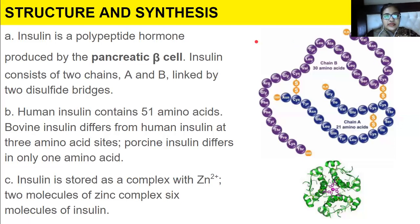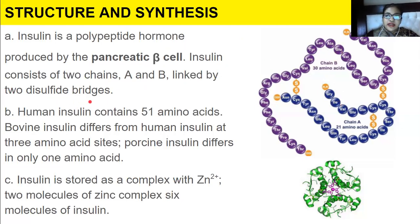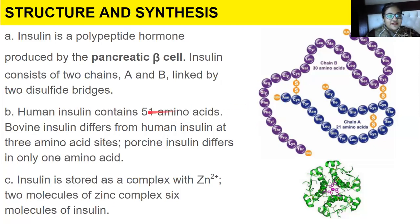Insulin is a polypeptide hormone produced by pancreatic beta cells. It consists of two polypeptide chains — chain A and chain B — linked by two disulfide bridges. Human insulin contains 51 amino acids. Bovine insulin differs from human insulin at three amino acid sites, and these amino acids are very important — for example, the absence of valine can lead to hemophilia.